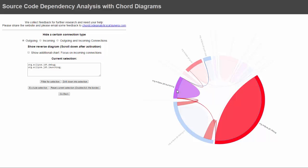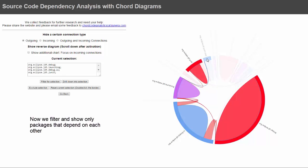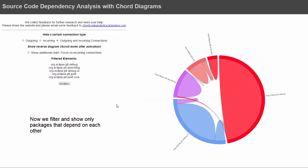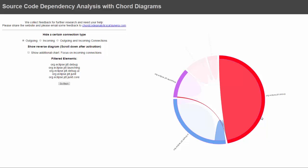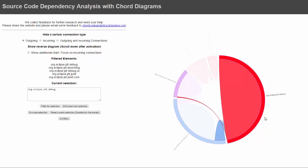I activate the packages again to see the call graph. Once they are all activated, I say filter for the selection. This means I just see the packages that have been in the selection, to exclude all the stuff that is not relevant to me. Now I see only the packages that have this outgoing graph.